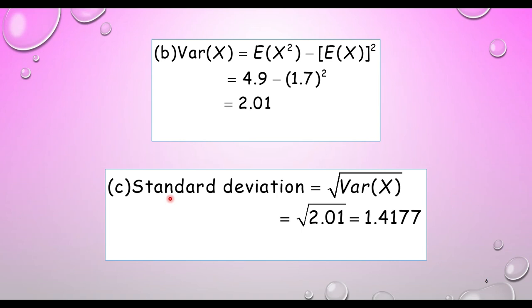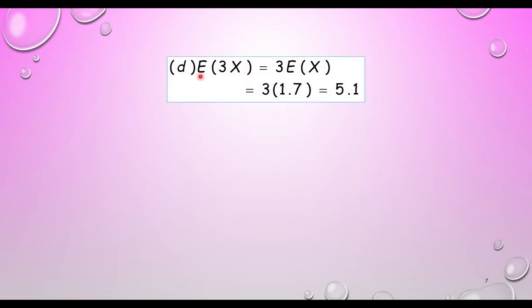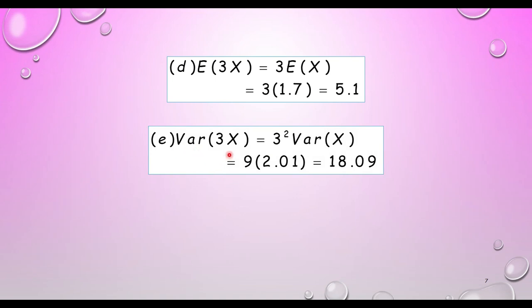For part (c), the standard deviation is the square root of Var(X): √2.01 = 1.4177. For part (d), the expected value of 3X: bring out 3 and multiply by E[X], so 3×1.7 = 5.1. For part (e), the variance of 3X: bring out 3 and square it, giving 3²×Var(X) = 9×2.01 = 18.09.